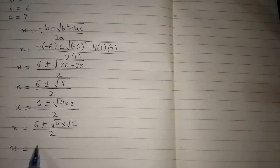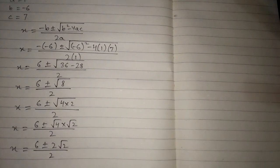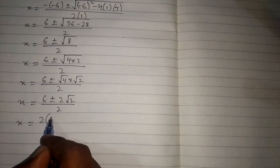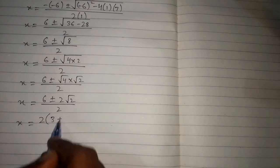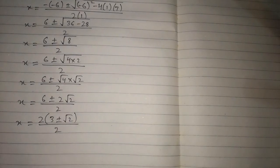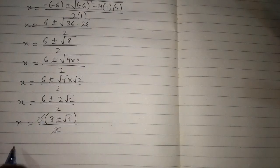The value of x is 6 plus or minus: the square root of 4 is 2, so we have 2 root 2 upon 2. Now we can take 2 as a common factor in the numerator, so we have 2 times (3 plus or minus the square root of 2) upon 2. And now we can cancel the 2's.